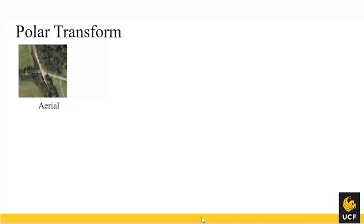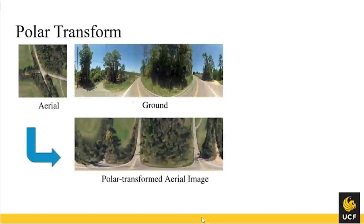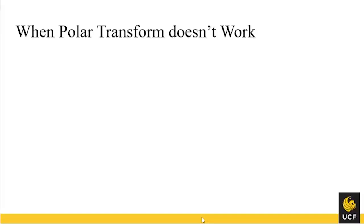Basically, it's a predefined transformation from one view to the other. We have an aerial view image and a ground truth street view image. The polar transform converts the aerial view image into a similar layout to the street view — but not real street view. You can see they look similar in terms of layout, but still have different content. This transformation is based on prior knowledge of the geometric correspondence between the two views, and it assumes the query lies exactly at the center of the aerial view image.